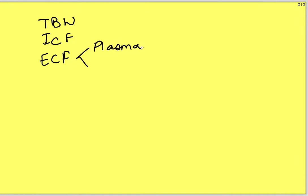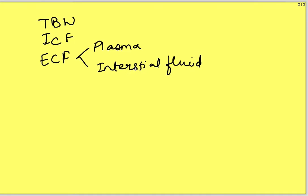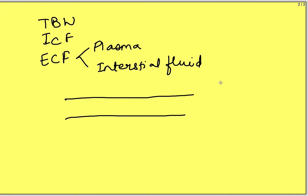This same principle is used for determining the distribution of body fluids. But which volume would be determined — will it be total body water, intracellular fluid, ECF, or within ECF, will it be plasma or interstitial fluid? It depends on where the substance can freely go. What we do is inject a substance of known concentration in a known volume into a vein, entering the circulation.